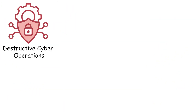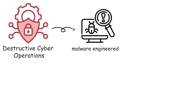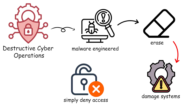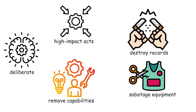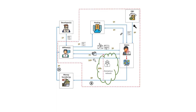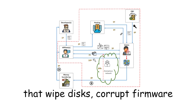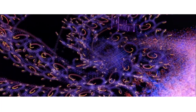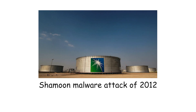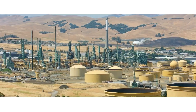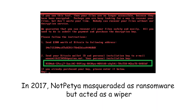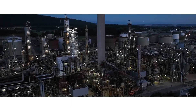Destructive cyber operations use malware engineered to corrupt, erase, or physically damage systems rather than simply deny access. These are deliberate, high-impact acts that remove capabilities, destroy records, or sabotage equipment. Execution frequently combines targeted espionage to identify critical assets with custom destructive payloads that wipe disks, corrupt firmware, or manipulate control sequences to cause wear or failure. The Shamoon malware attack of 2012 wiped more than 30,000 Saudi Aramco systems, crippling one of the world's largest energy firms. In 2017, NotPetya masqueraded as ransomware but acted as a wiper, destroying data across Ukrainian networks and inadvertently cascading into global companies, causing billions in damage.